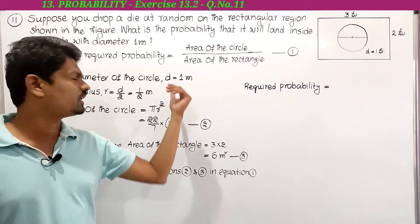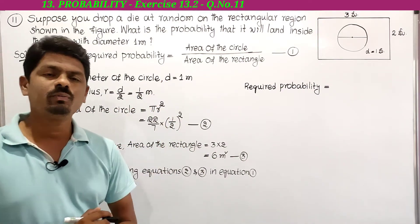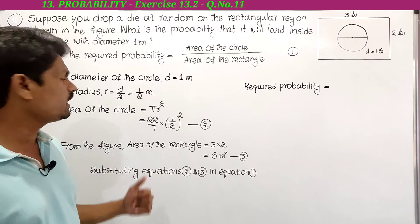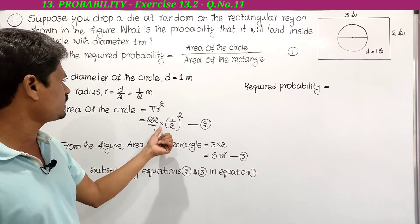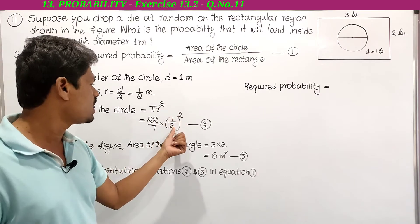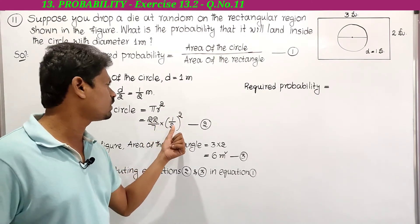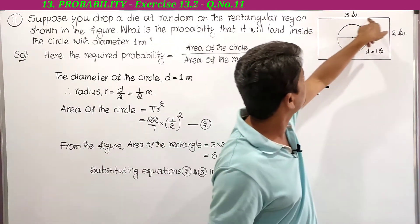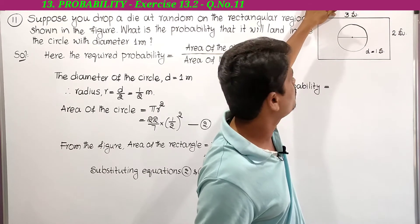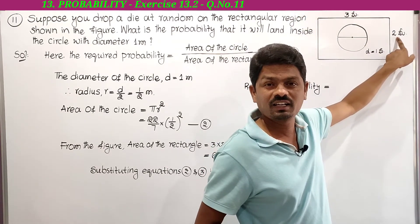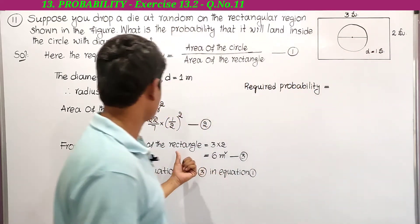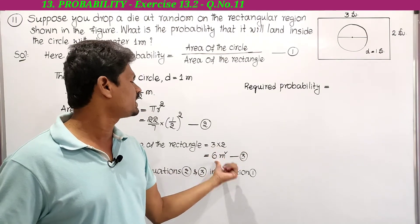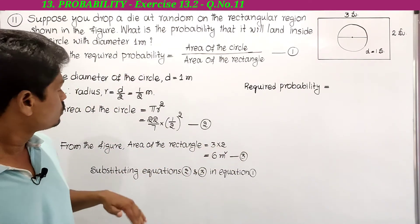The diameter of the circle is given as 1 meter, therefore radius r = d/2 = 1/2 meter. Area of the circle = π r² = 22/7 × (1/2)². From the figure, the length of the rectangular region is 3 meters and the breadth is 2 meters, so area of the rectangle = l × b = 3 × 2 = 6 m².